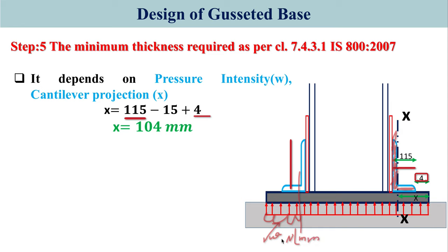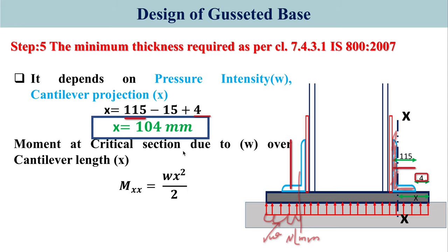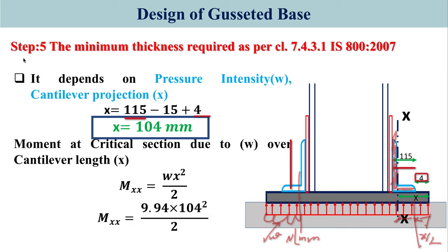The base plate acts as a cantilever with a UDL of intensity w (N/mm). The bending moment at the critical section is M = w × x × (x/2) = w × x²/2. Substituting values gives a moment of approximately 53,755 N·mm per mm width, because pressure w is in N/mm² and for unit width becomes N/mm, multiplied by mm² gives N·mm/mm.